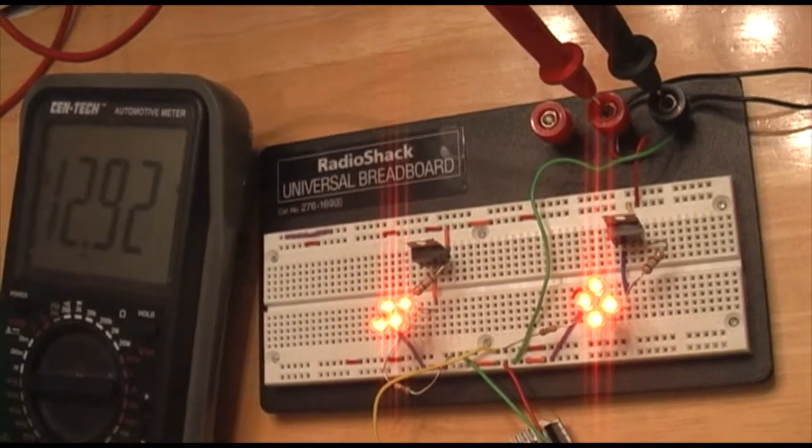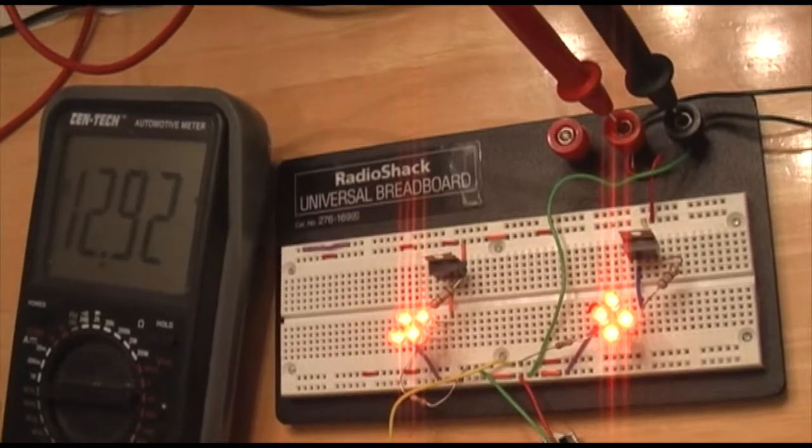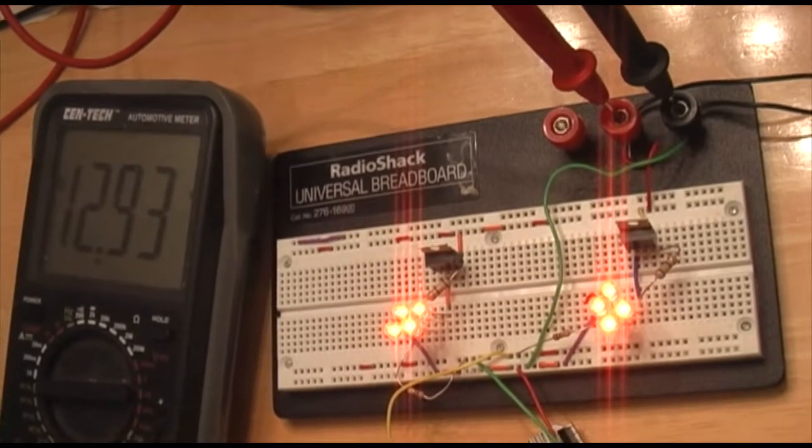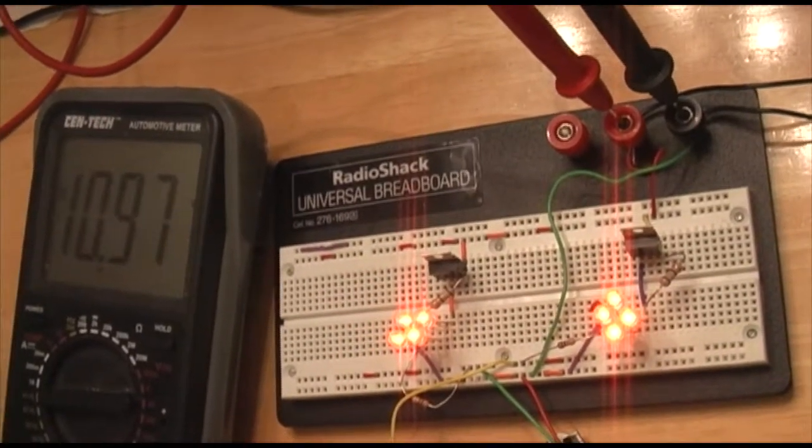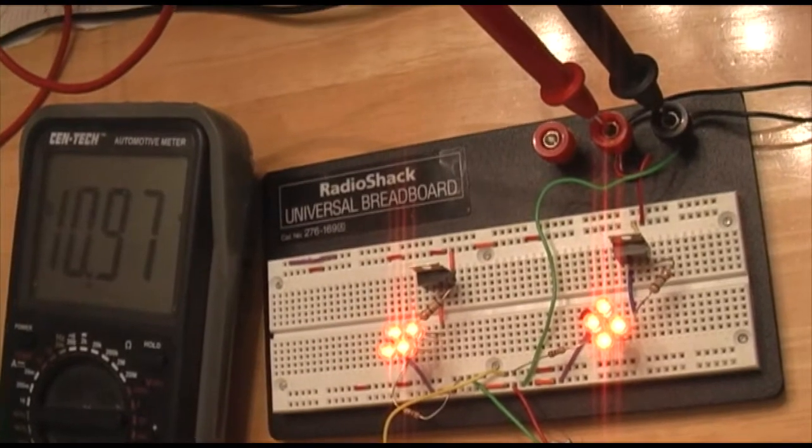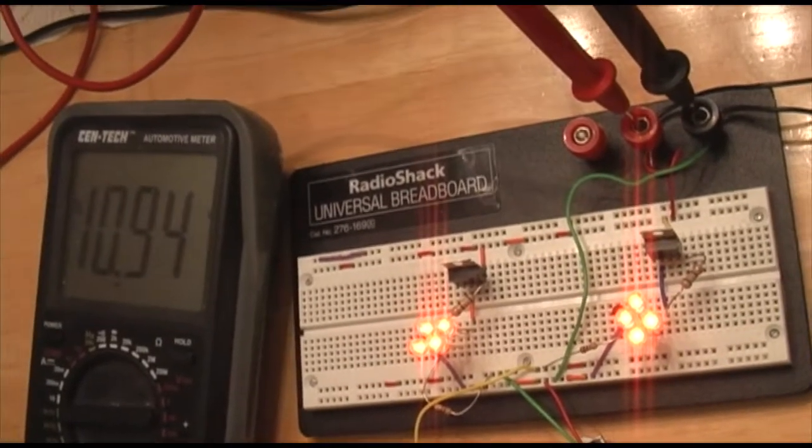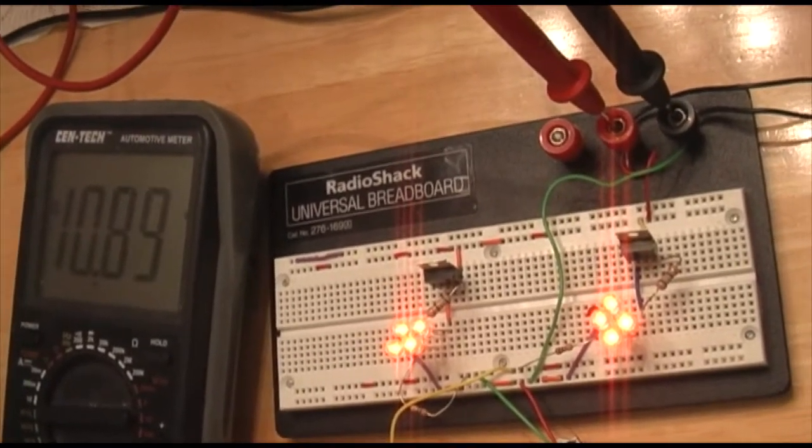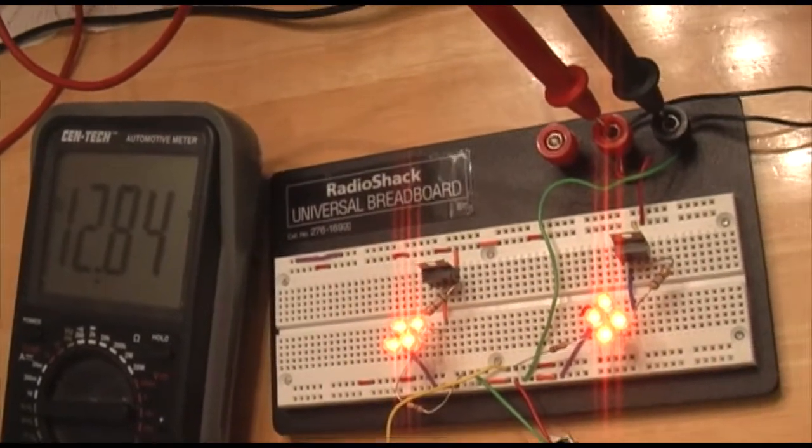And notice the brightness stays the same when we drop back down. Now due to the forward voltage we do lose some brightness if we drop down below 11 volts. We're using up all the voltage that we have so the lights get a little dimmer. So if we bump it back up then the lights come back to the normal brightness.